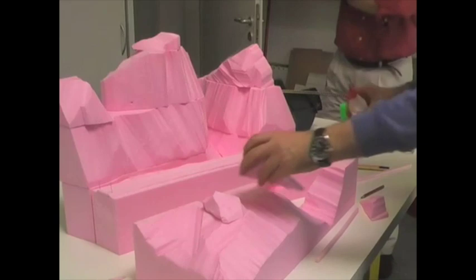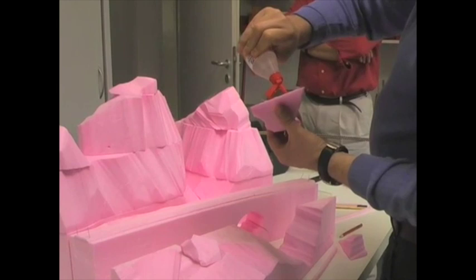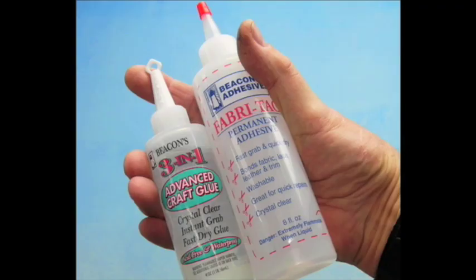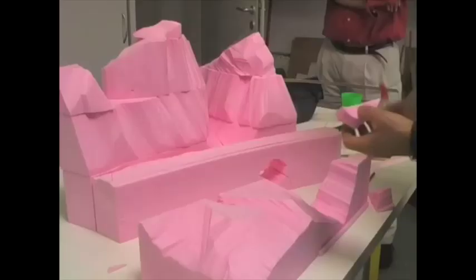The cement that Albert is using to hold the foam pieces together is called Tessa. It's a European product. It's like liquid airplane cement and the closest thing I've found in this country is Beacon Adhesives 3-in-1 Advanced Craft Glue and Fabri-Tac. Both of them seem to have the same working qualities and they're both available in craft stores and fabric stores.